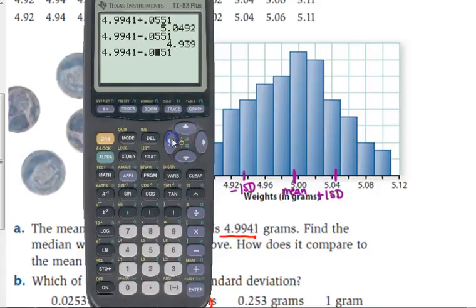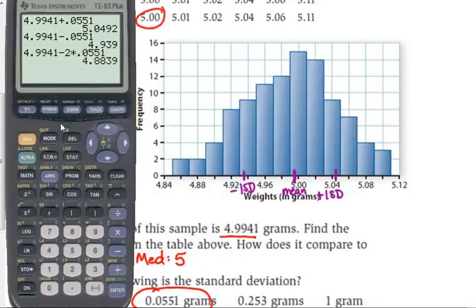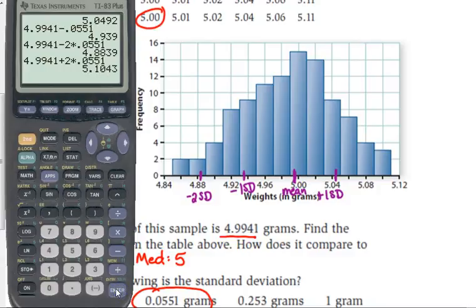And I can do two above and two below by just multiplying my standard deviation by two. So two below is 4.8839, so about right here is minus two standard deviations. 5.10, about right here is plus two standard deviations.